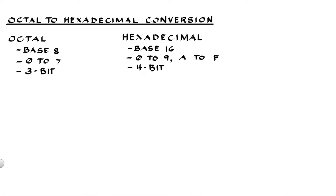Hello, it's Pinkpoint. In this video, we will convert octal numbers into hexadecimal numbers. Octal is a base 8 number system using digits from 0 to 7, and each digit represents a 3-bit value. Hexadecimal is a base 16 number system using digits from 0 to 9 and letters from A to F, and each hex character represents a 4-bit value.